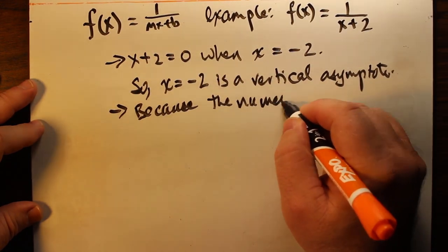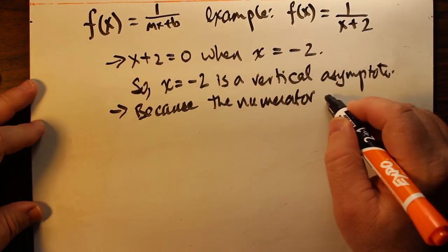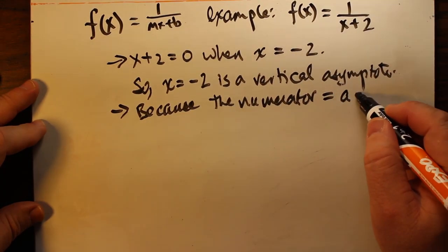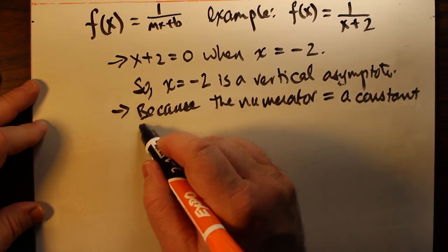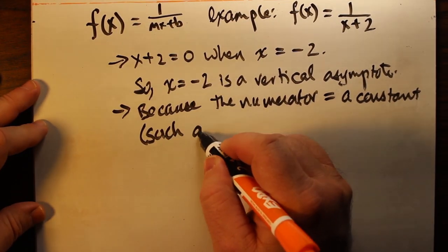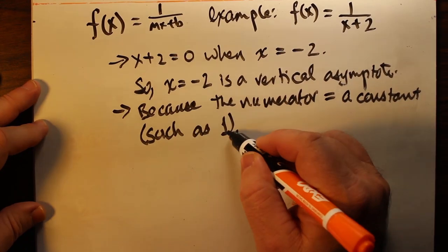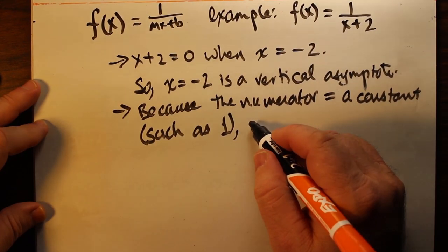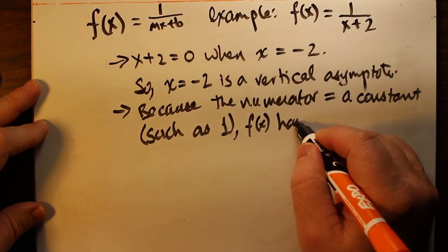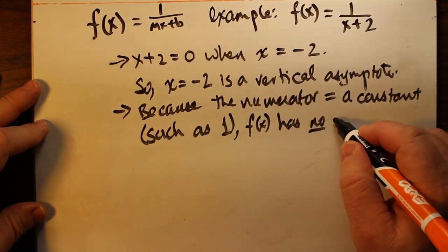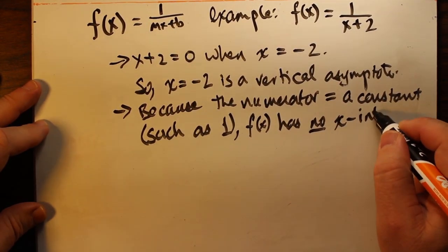So we have both a horizontal asymptote and a vertical asymptote. The horizontal asymptote is the x-axis because the numerator is a constant—in this case, one—and so it will never equal zero. We have a vertical asymptote at x equals negative two, as stated earlier.